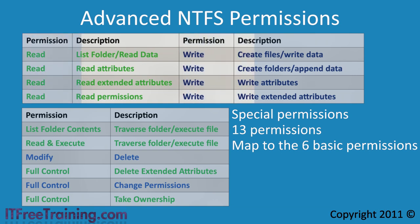If I now look at the basic write permission, this is also assigned to 4 of the advanced permissions. The first is create files write data. At the folder level this gives you the ability to create files in the folder. If you don't want to allow creating of new files, edit the existing folder permissions and clear this permission. If you apply this permission to a file, it allows the user to write to the file.